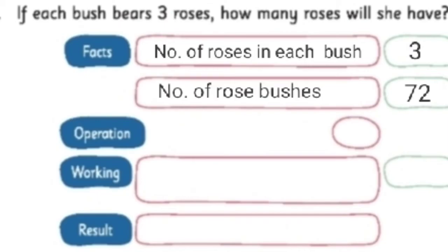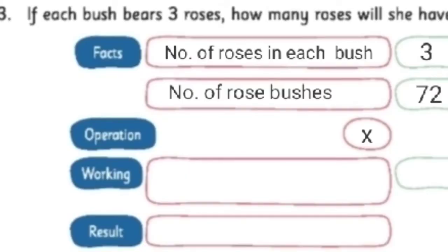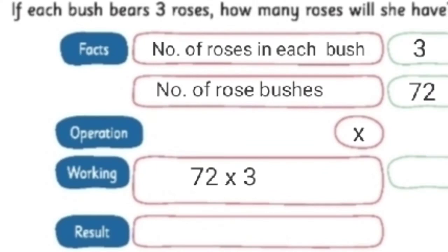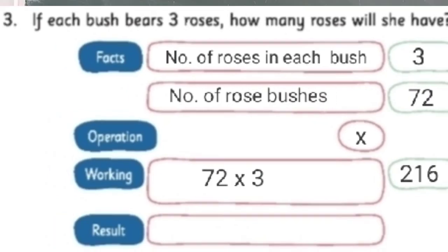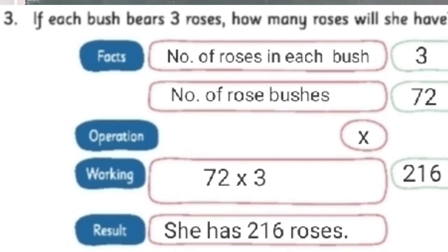Next is operation. One rose bush will have 3 roses, and 72 rose bushes will have how many? So the operation is multiplication. Next, let's write the working. 72 into 3. What is 72 into 3? 72 into 3 is 216. So the result is: she has 216 roses.